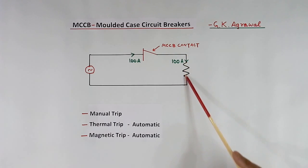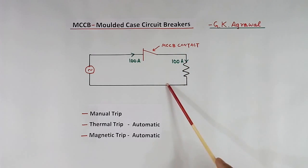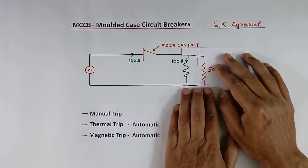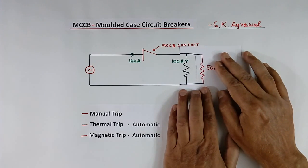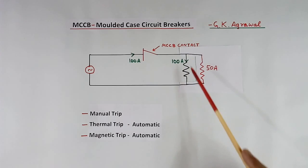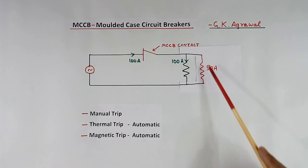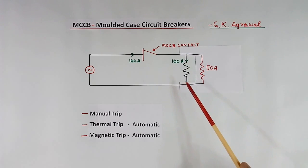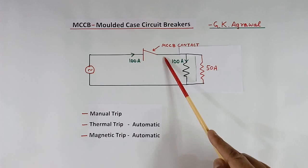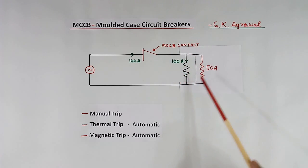Suppose 100 A current is flowing — that is the maximum current allowed. One possibility is someone connects another load. Earlier current was 100 A, now 50 more A is flowing, so here current will become 150 A. This is called overload.